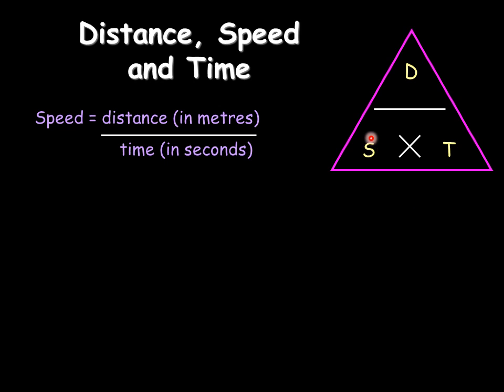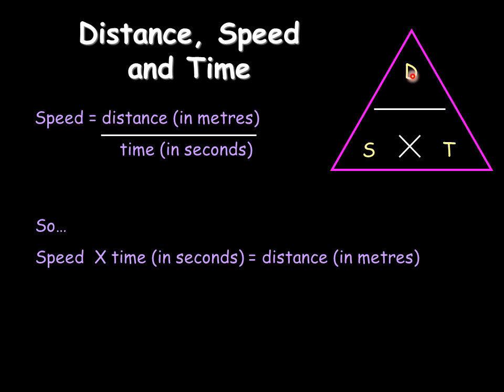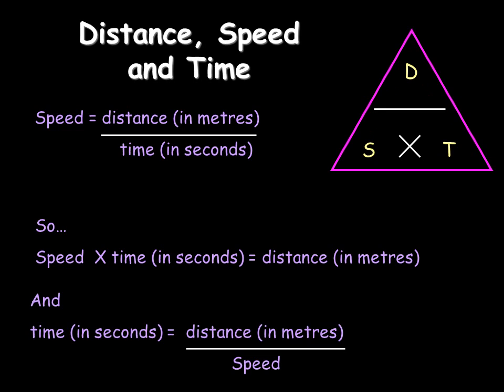This triangle works like this: if you cover over S for speed, you're left with D divided by T, which is this equation here. If you want to know what distance is, distance is speed times time. And finally, if you want to know what T is, cover over T, you're left with D divided by S, which is distance divided by speed.